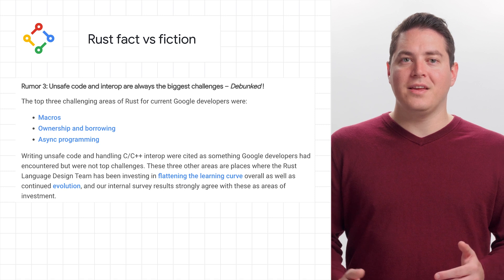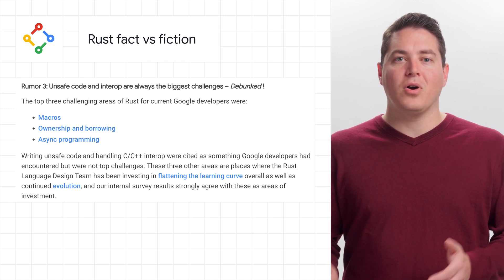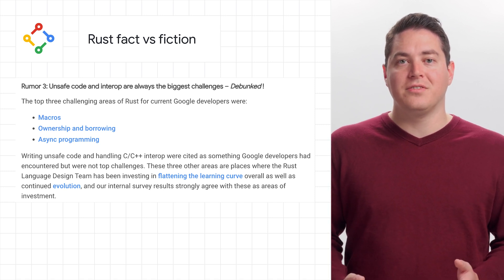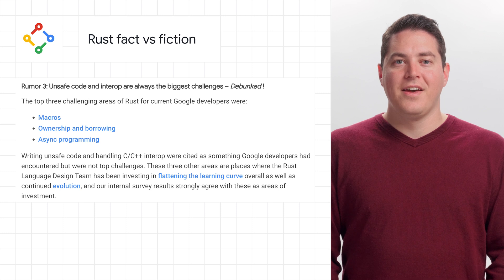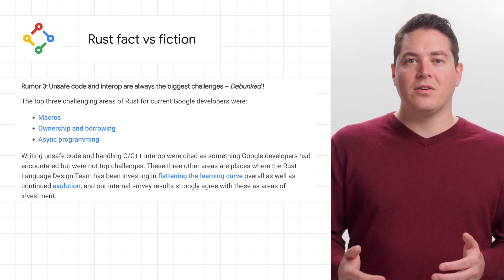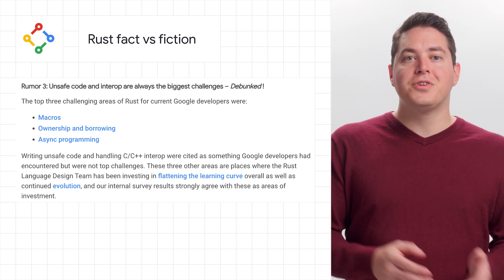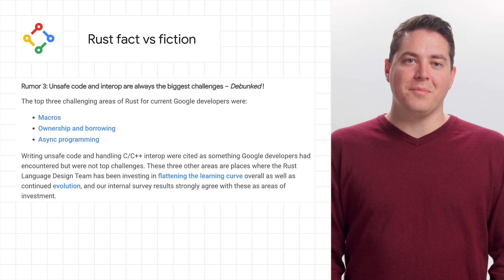Rumor number three is that unsafe code and interop are always the biggest challenges — which is debunked. The top three challenges actually include macros, ownership and borrowing, and async programming.